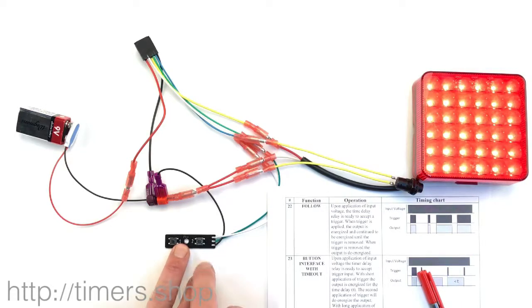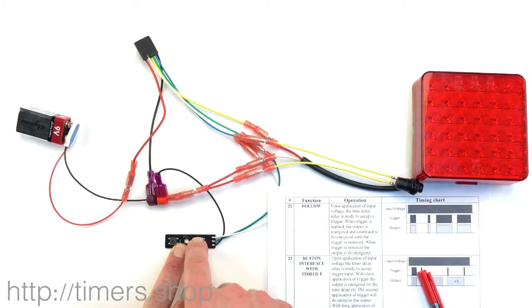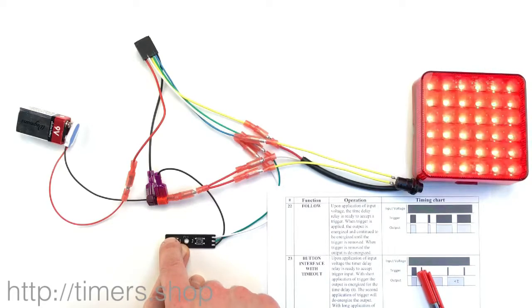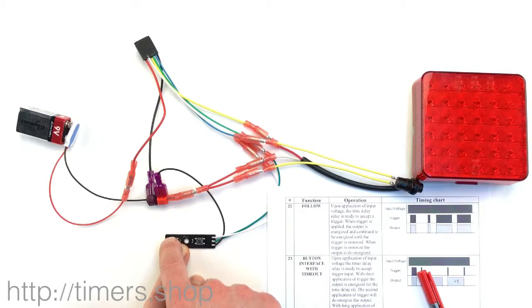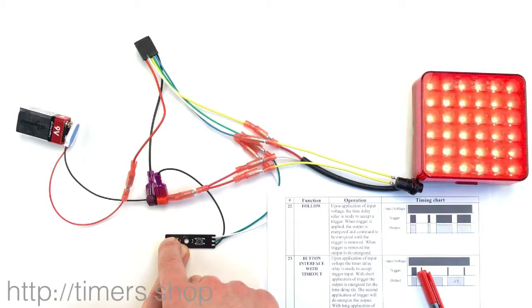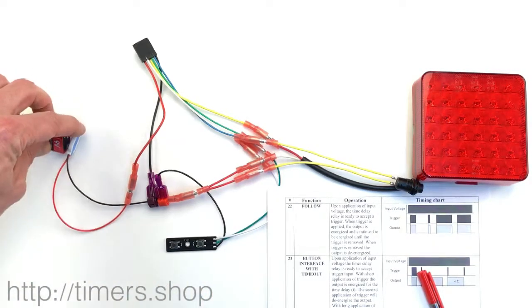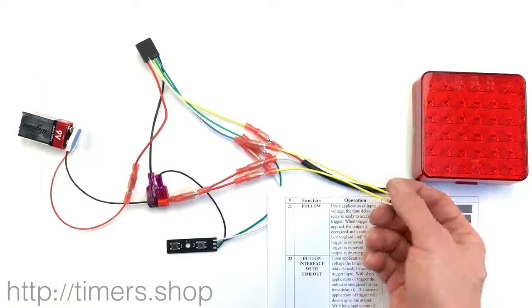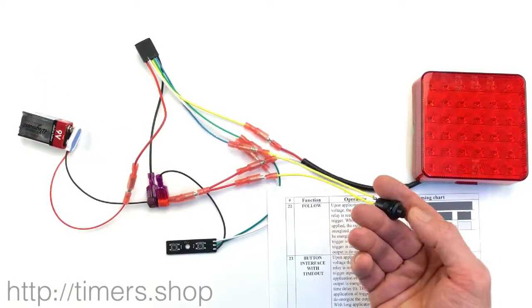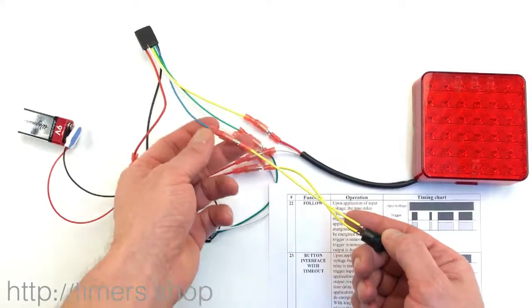Going to the function menu, setting up trigger to 4 and function 22. Now we're supplying the power. Push the button—on, off, on, off. The button connects the trigger to ground.